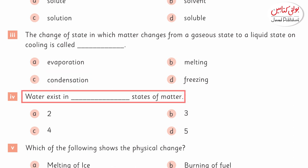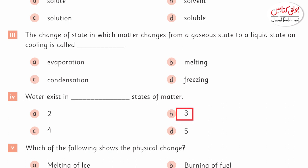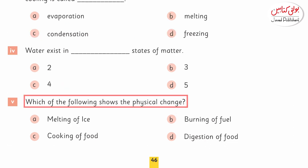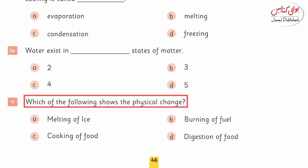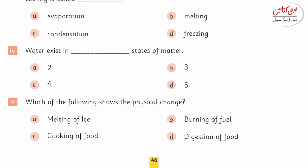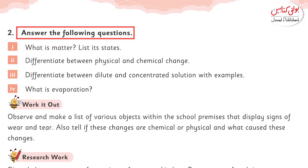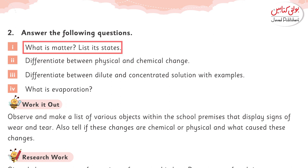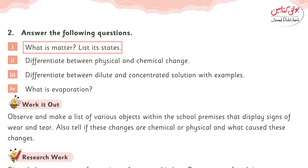Water exists in dash states of matter — two, three, four, or five. Option B, three, is the right answer. Which of the following shows a physical change — melting of ice, burning of fuel, cooking of food, or digestion of food? Option A, melting of ice, is the right answer.